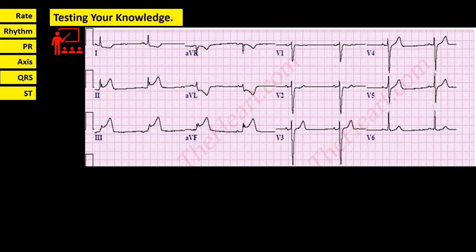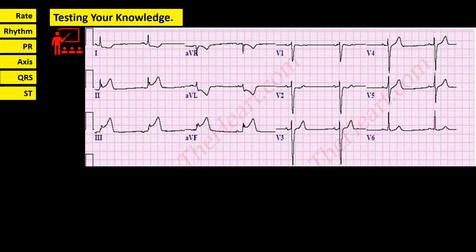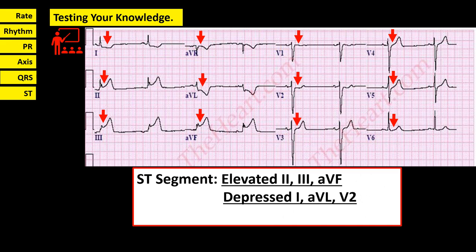In this other example, looking at leads 1-AVL which are depressed, leads 2-3-AVF which are elevated, AVR which is isoelectric, leads V1, V3, V4, V5, V6 which are isoelectric, and lead V2 which is depressed — you report: ST segment is elevated in leads 2, 3, AVF and depressed in leads 1, AVL, and V2.